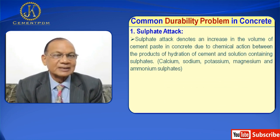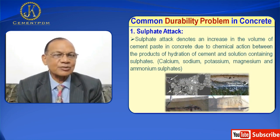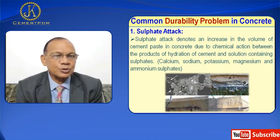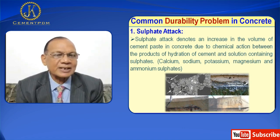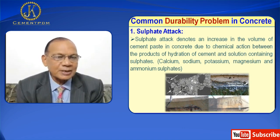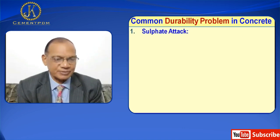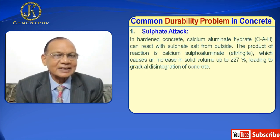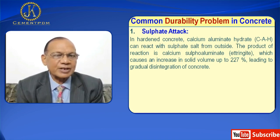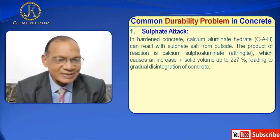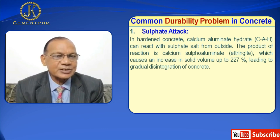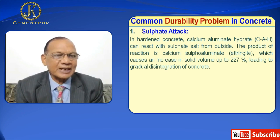Sulfate attack denotes an increase in the volume of cement paste in concrete due to chemical action between the products of hydration of cement and solutions containing sulfate — calcium, sodium, potassium, magnesium, and ammonium sulfate. In hardened concrete, calcium aluminate hydrate (CAH) can react with sulfate salts from outside. The product of reaction is calcium sulfoaluminate, that is ettringite, which causes an increase in solid volume up to 227 percent, leading to cracking and disintegration.